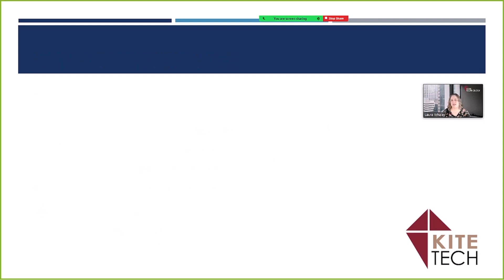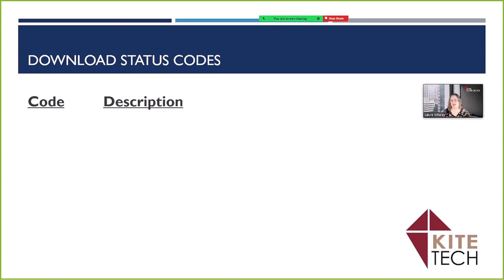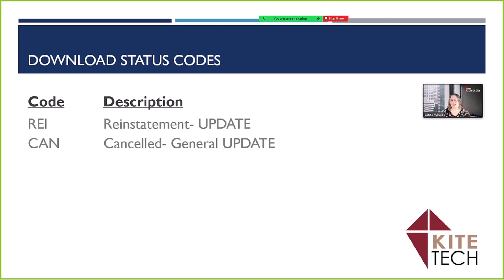Our final category is our download policy statuses. In these status codes, we have REI for reinstatement, CAN for cancellation, and SYN for data synchronization. All of these policy statuses must be updated by agency personnel in order to run proper reports and for EPIC to assign the proper commission agreements.